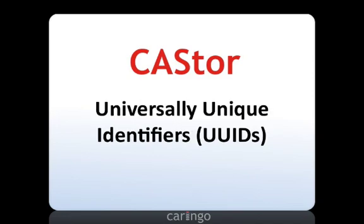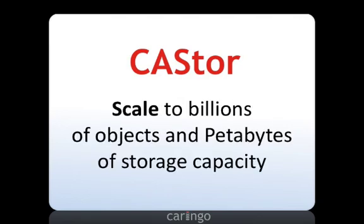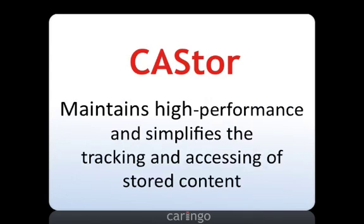By using universally unique identifiers, or UUIDs, a Caster storage cluster can scale to billions of objects and petabytes of storage capacity while maintaining high performance and simplifying the front-end client's job of tracking and accessing their stored content.